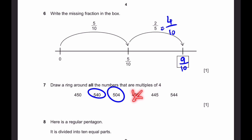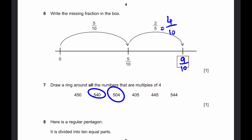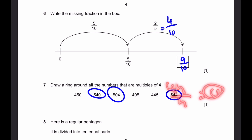So we cannot circle 405, and for the same reason we cannot circle that number either. 544 — we can circle this because the last two digits are 44. Divide by 4, we get 11, which is a whole number. So that's our answer.